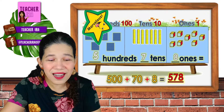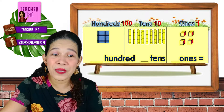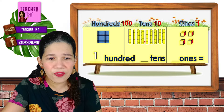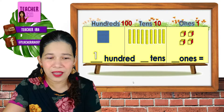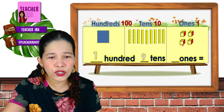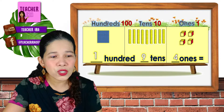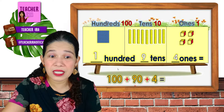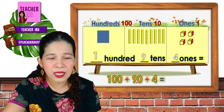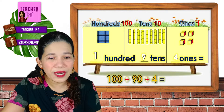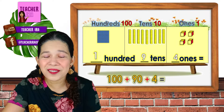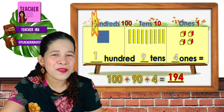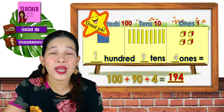One more. How many 100s? We got 1 hundred, which is 100. How about 10s? 1, 2, 3, 4, 5, 6, 7, 8, 9 — we got 9 tens. How many 1s? 1, 2, 3, 4 — just 4 ones. So 100 means 100, 9 tens means 90, and 4 ones simply means 4. So 100 plus 90 plus 4 is 194. That's a great job, children!